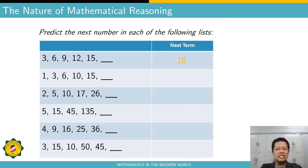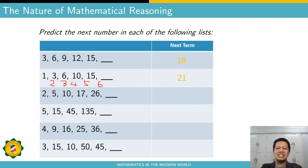How about the second sequence: 1, 3, 6, 10, 15? The answer is 21. That is by adding the counting numbers starting with two — so we add two, then three, then four, then five, and then we add six to get the next term, which is 21.